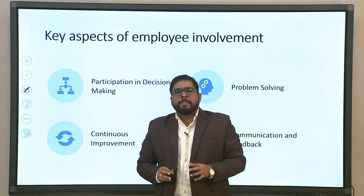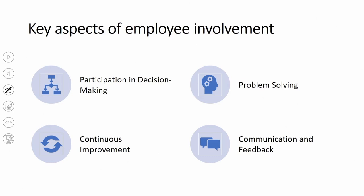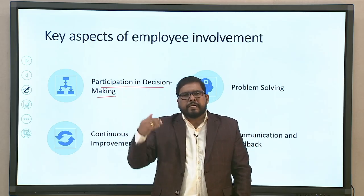With that understanding, we move to key aspects of employee involvement. The first and most important aspect is participation in decision making. Many a time organizations tend to ignore junior level employees — it is customary that that happens. Unfortunately, we also see senior employees getting ignored. These are practical situations we see in every single organization, and if you have a discussion with any employee at that particular level, you will hear these stories.